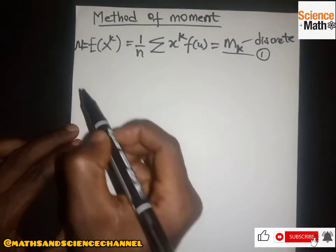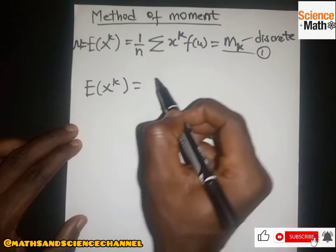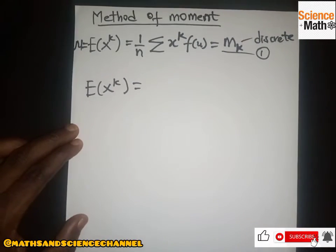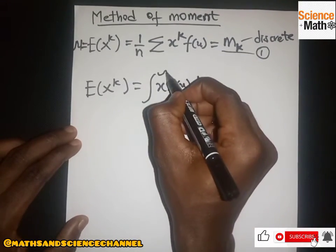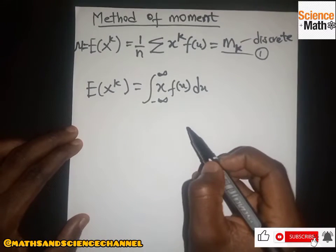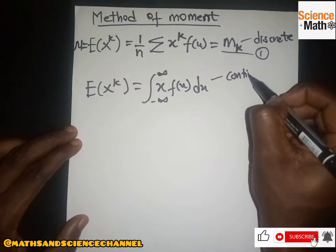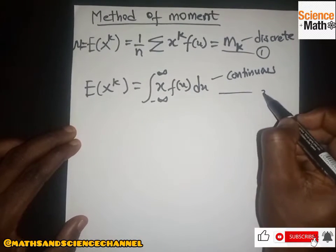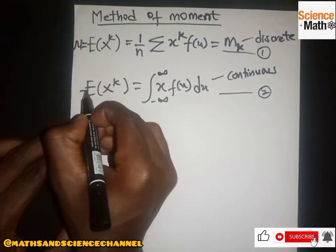The second case is when you are given a continuous variable. For a continuous variable, E[X^k] is solved similarly to finding the mean of a probability density function for a continuous variable — you take the integral of x multiplied by f(x), from negative infinity to positive infinity. We call this equation two. Note that this is also equal to the mean, mu.